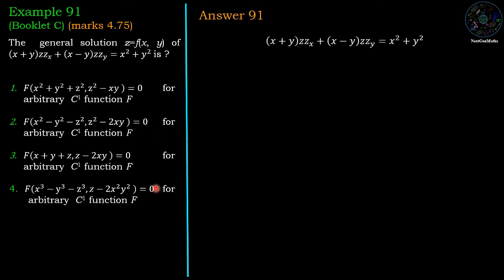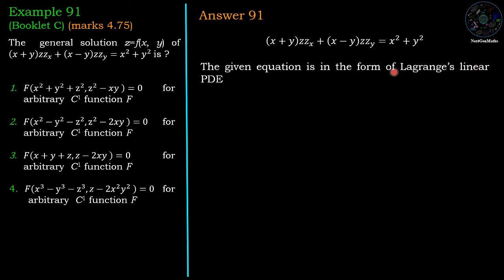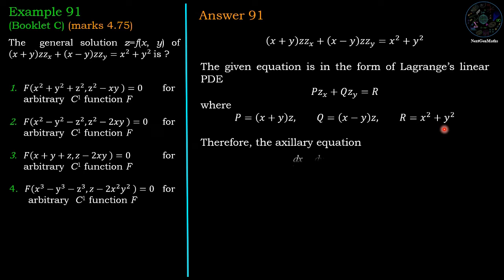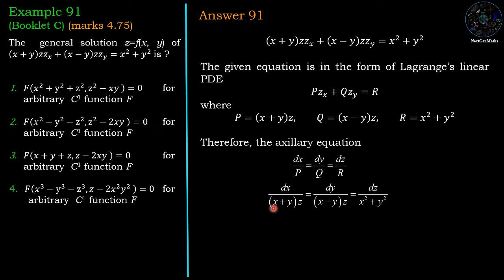The given equation is in the form of Lagrange's linear partial differential equation: P·z_x + Q·z_y = R, where P = (x+y)z, Q is the coefficient of z_y which is (x-y)z, and R is the right-hand side term x²+y². The corresponding auxiliary equation is: dx/P = dy/Q = dz/R, giving dx/[(x+y)z] = dy/[(x-y)z] = dz/[x²+y²].